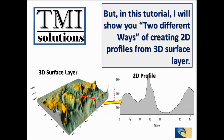The objective of this tutorial is to create a 2D profile from a 3D surface layer. This is a 3D surface layer and this is a 2D profile. This 2D profile was obtained from the surface of the 3D surface layer by drawing a straight line across these positions. The idea is to determine how deep this drainage channel is. But usually on a 3D surface layer, it is not possible to create a 2D profile like this. In this tutorial, I will show you two different ways of doing so.